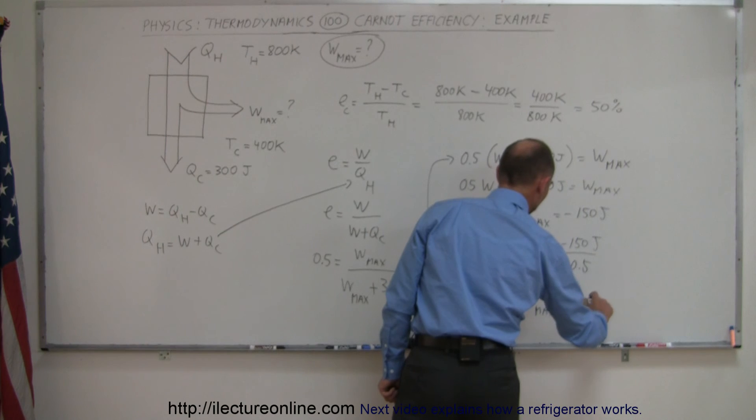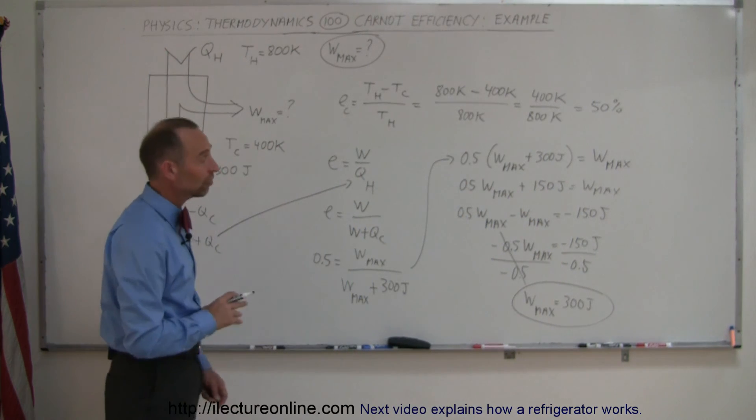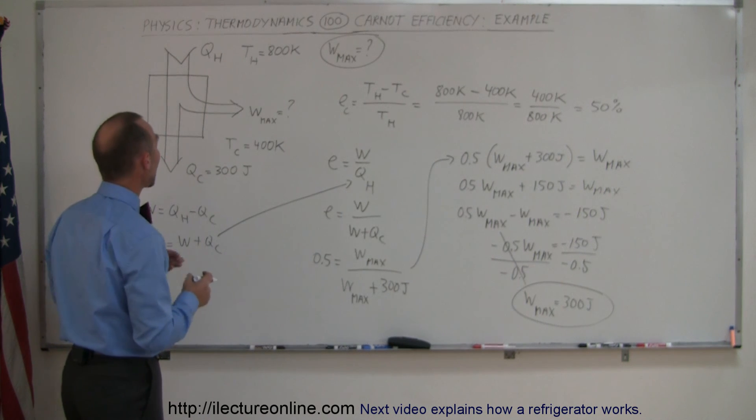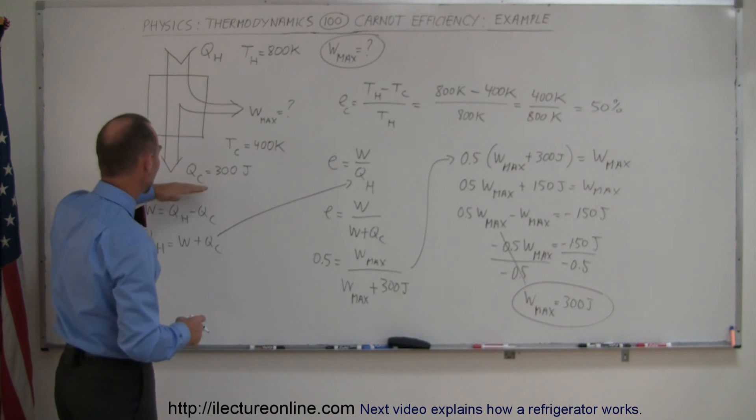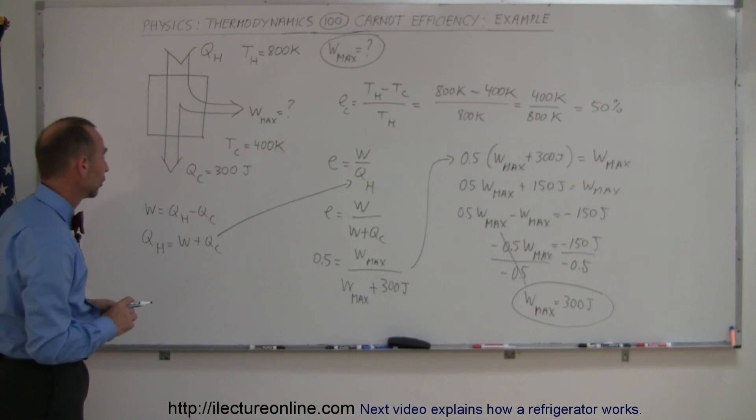So, based upon the Carnot efficiency, the biggest or the best maximum output we can get for the work would be 300 joules, if 300 joules of heat are expelled to the cold reservoir.